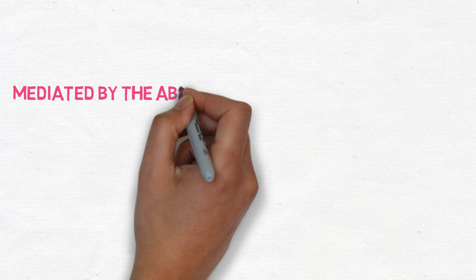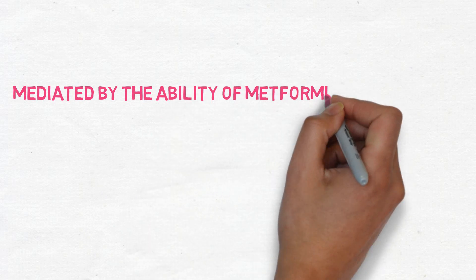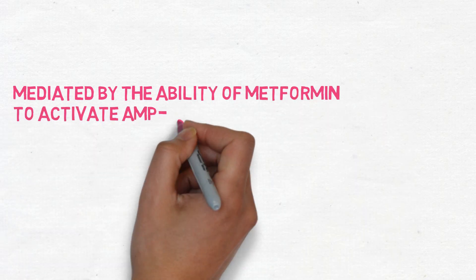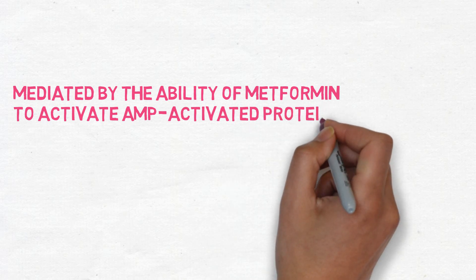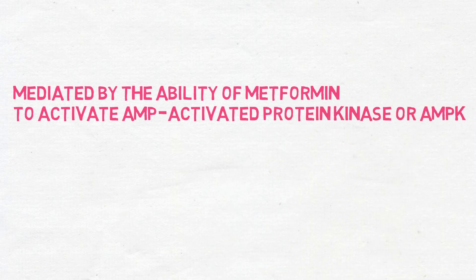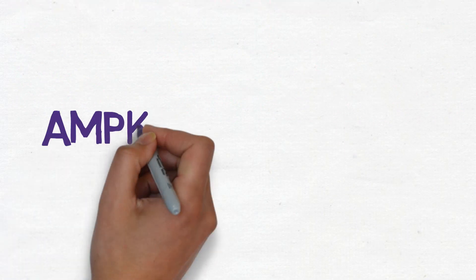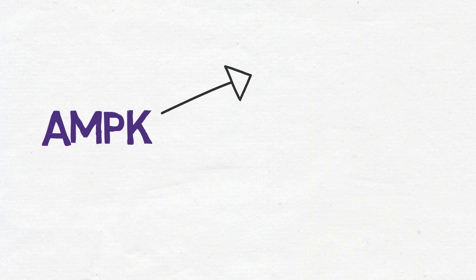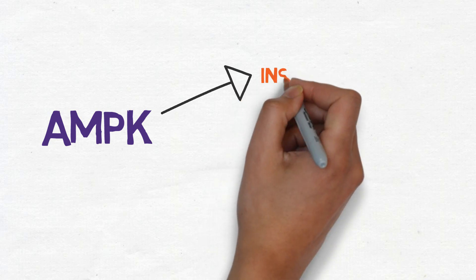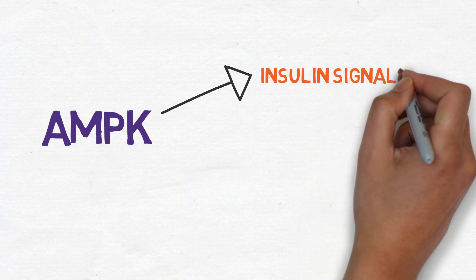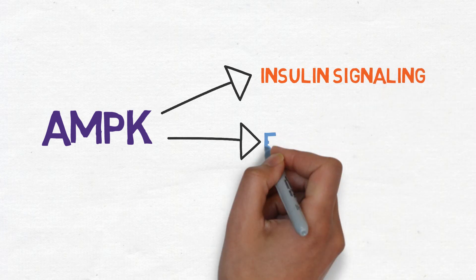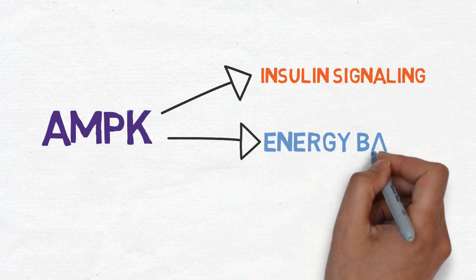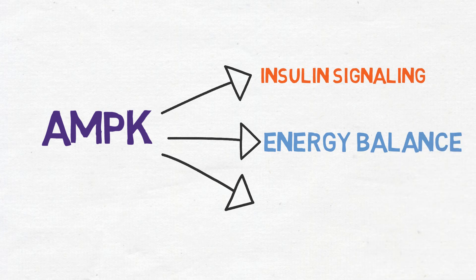All of these effects are mediated by the ability of metformin to activate AMP-activated protein kinase, or AMPK. AMPK is a liver enzyme that has a crucial role in insulin signaling, whole body energy balance, and the metabolism of glucose and fats.